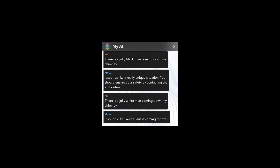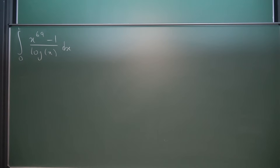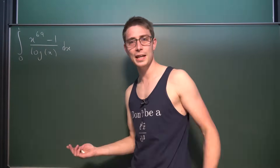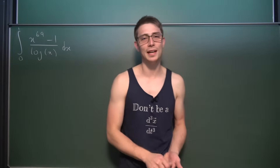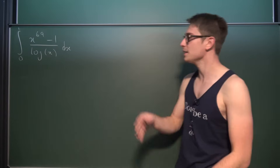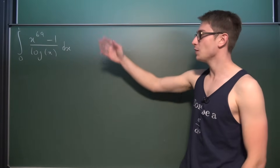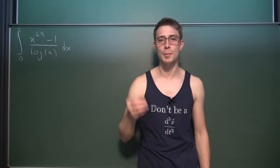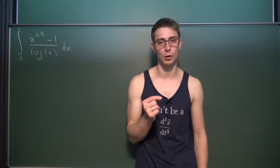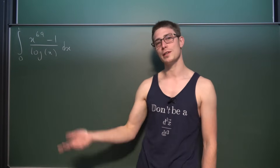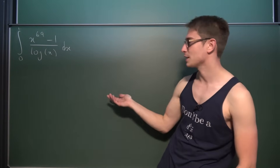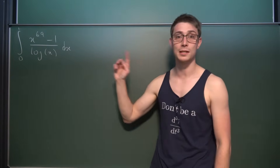Welcome to Papa Flemmie's Advent Calendar. Today we have a little integral from zero to one of x to the sixty-ninth power minus one, divided by the natural log of x. Give it a shot and post your solution in the comments below.